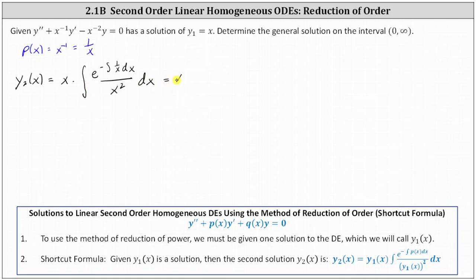Now let's begin to evaluate this. We have x times the integral of e to the power of the opposite of the integral of one divided by x dx. That inner integral equals negative natural log x plus a constant, which we'll call c sub one. This is still divided by x squared.